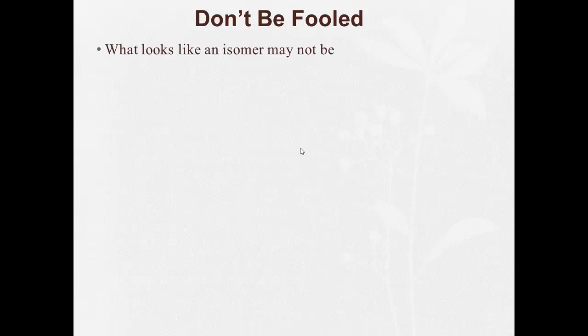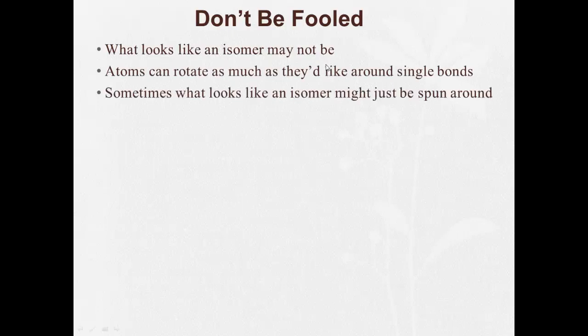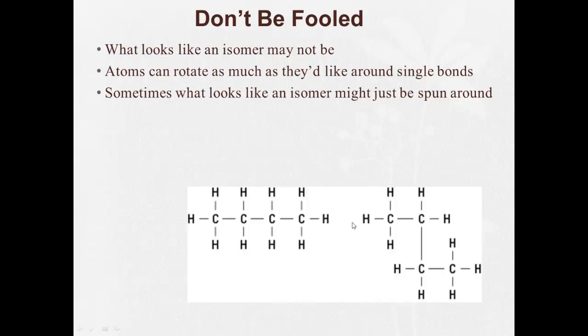Okay, don't be fooled. What looks like an isomer may not be. Atoms can rotate as much as they'd like around single bonds. And sometimes what looks like an isomer might just be spun around. So these two, at first glance, look like they might be isomers of each other.